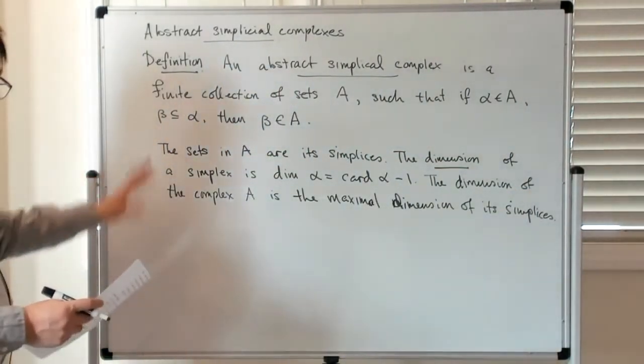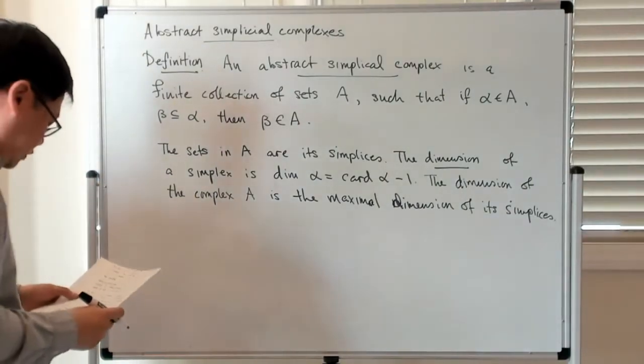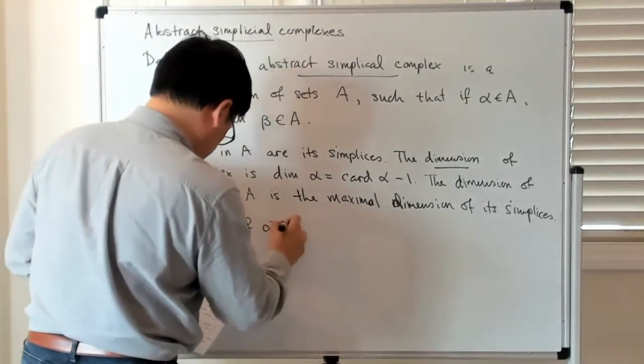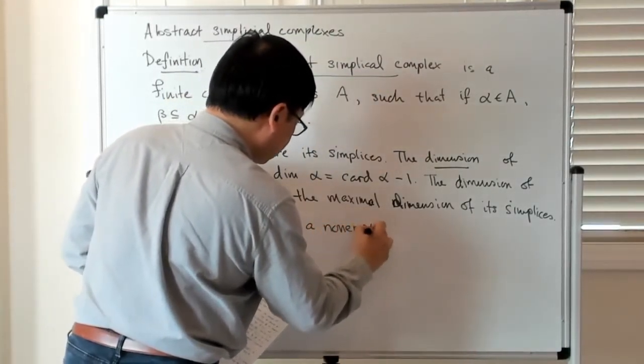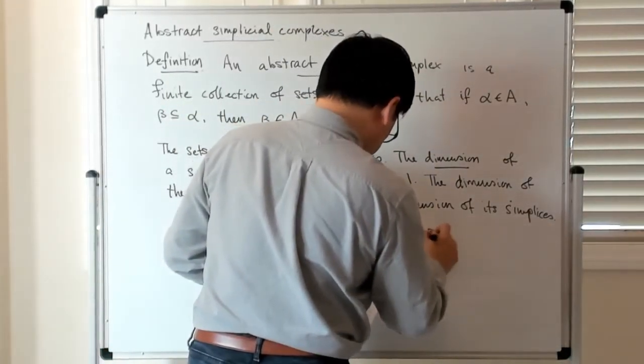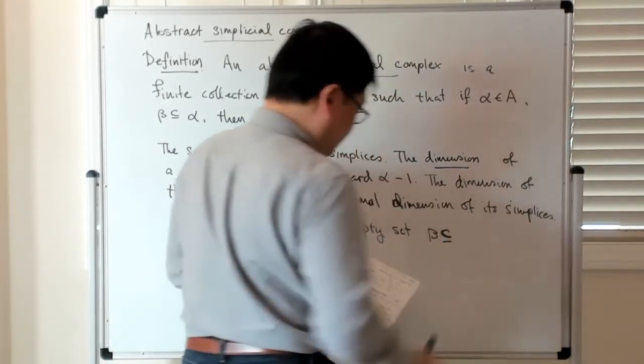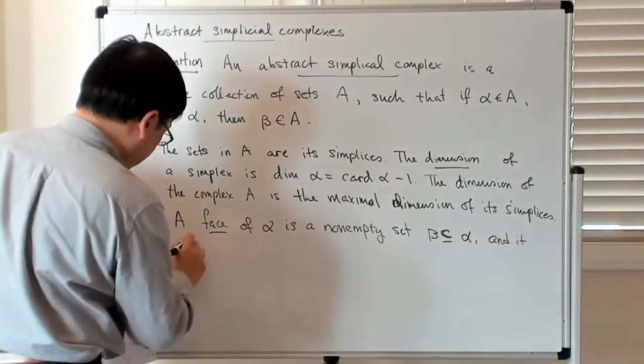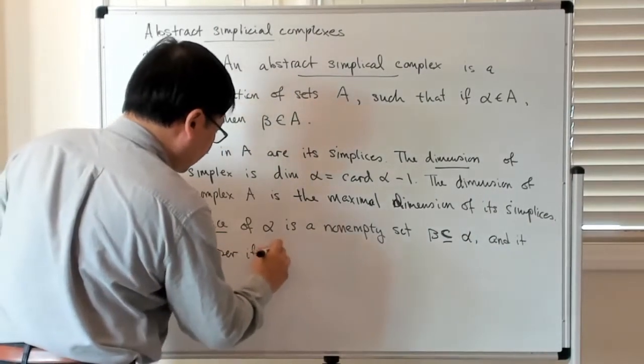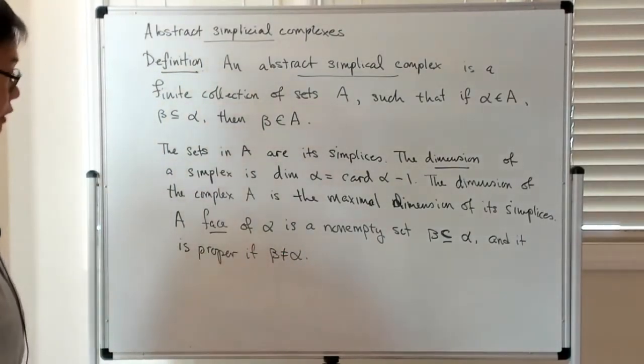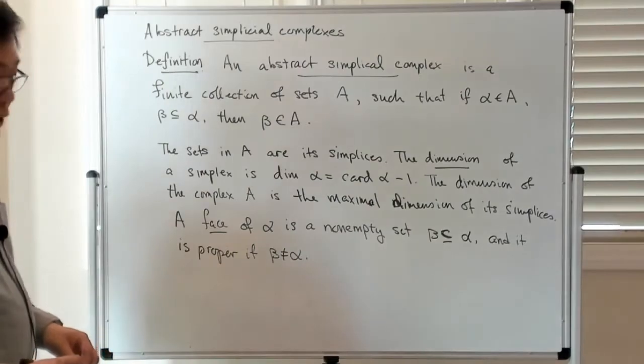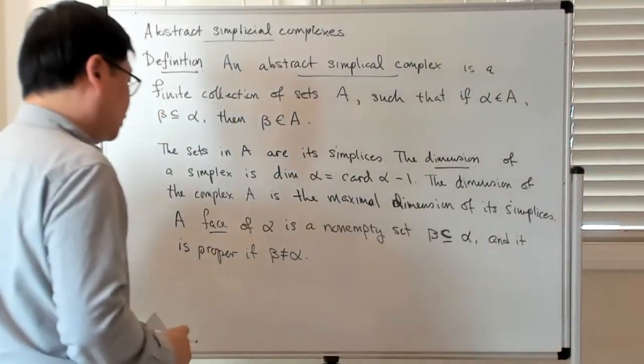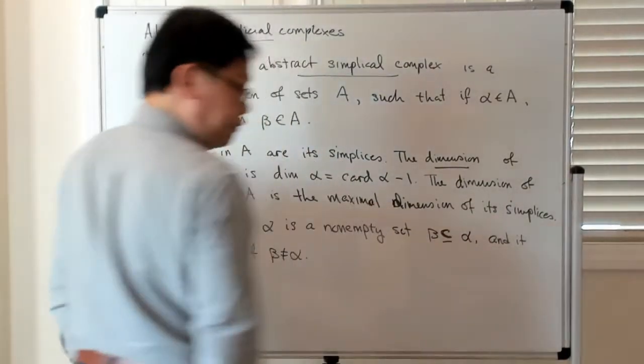We're going to follow much of what we have done in the geometric case, but now in this abstract setting. A face of alpha is a non-empty set beta which is a subset of alpha, and it is proper if beta is not alpha. This is analogous to what we had before. Then there's the dual notion of co-faces: alpha is a co-face of beta, and beta is a face of alpha.